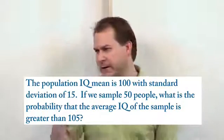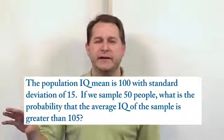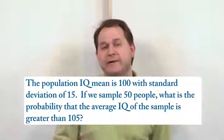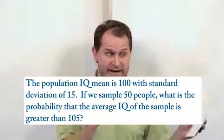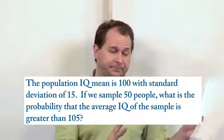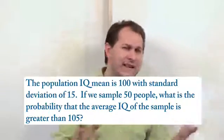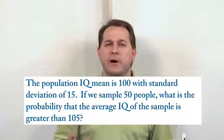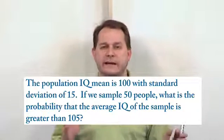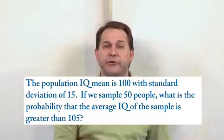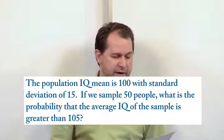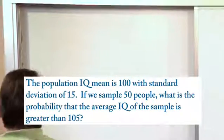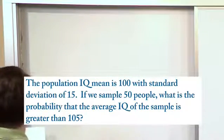It's exactly the same problem that we did in the last lesson, except now, instead of finding the probability that a sample of 50 is less than 95, we want to see what is the probability that the average IQ of those 50 people is greater than 105. It's very, very similar — that's why I chose it here.